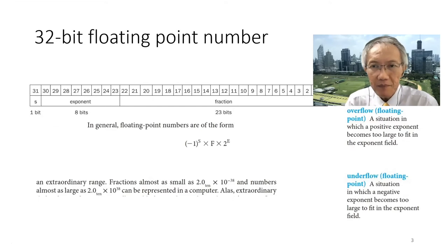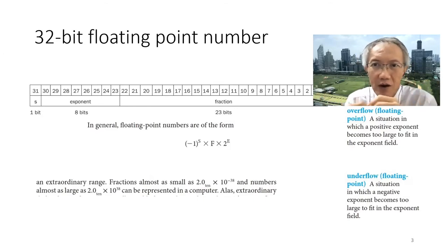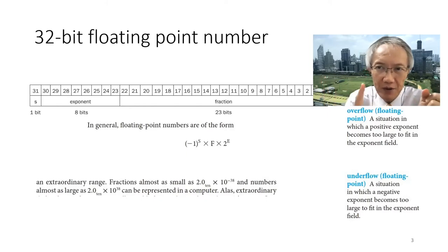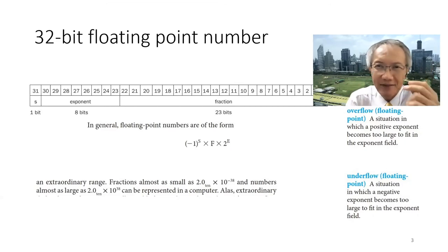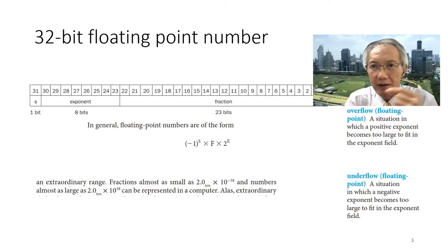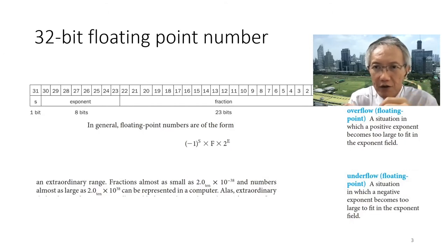The processor used in the textbook has two formats to store the floating point number. One is 32-bit, which is more or less standard — that is the IEEE standard. The other is 64-bit. 32-bit we call single precision, and 64-bit we call double precision.